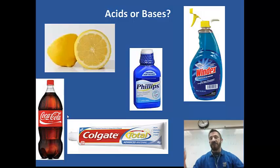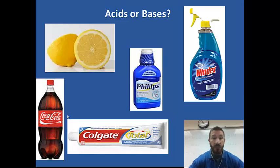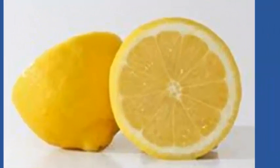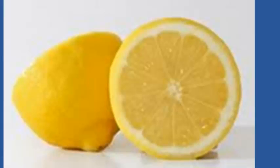Here we have five different things. Let's classify them as acids or bases. First, the lemon — a lemon is definitely an acid. Lemons contain citric acid, which is what vitamin C is. Any citrus fruit would have citric acid, so grapefruits, oranges, lemons, and limes are all acids.